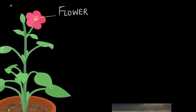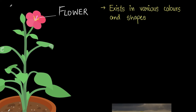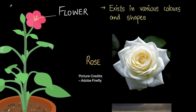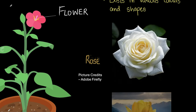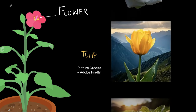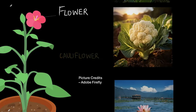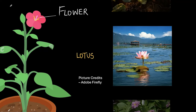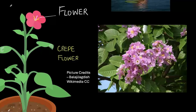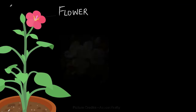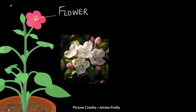Next we've got flowers. Flowers are really beautiful and they exist in various colors and shapes. Here's a short slideshow of a few flowers: here's a rose, a white beautiful rose; we have a tulip; we have another interesting flower, the cauliflower — yes, this is a kind of flower. Then we've got a lotus and here's a crape flower, which you must have seen quite a lot around town. Okay, the slideshow is over, let's get back to the class.